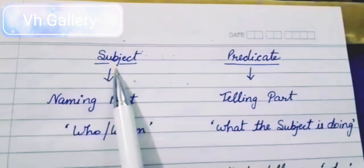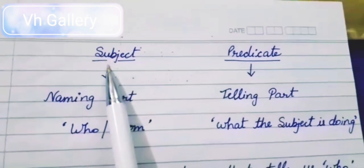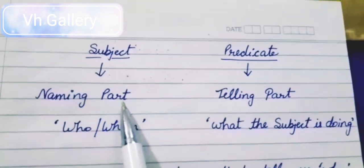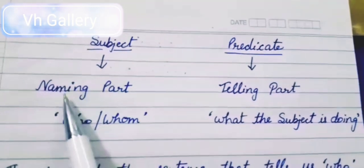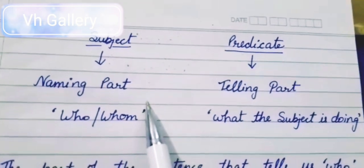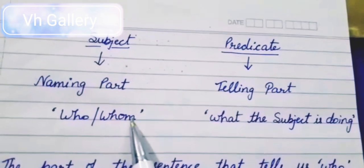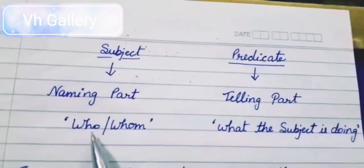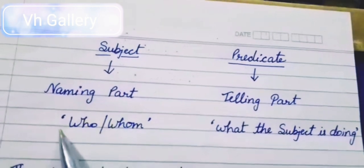Now we will learn what is subject and what is predicate. First of all, we will consider subject. Subject is a naming part in a sentence. Subject kya hai? Naming part — that means who or whom. Yani ki, ek sentence mein jis se pata chalta hai ki kaun us kaam ko kar raha hai, ya kisi particular person ke liye, fruits ke liye, ya kisi bhi noun or pronoun ke liye jho sentence likha ja raha hai — that is our subject.